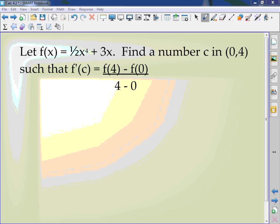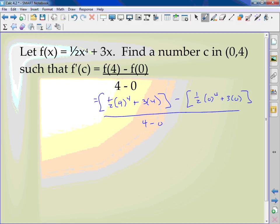First thing we're going to do is just solve this by putting in 4 into the equation. I have ½(4)⁴ + 3(4) minus ½(0)⁴ + 3(0) all over 4 - 0.